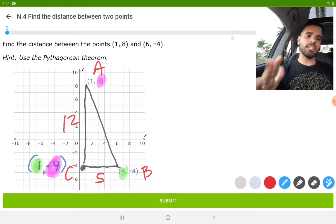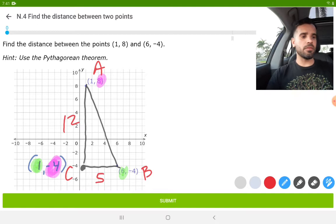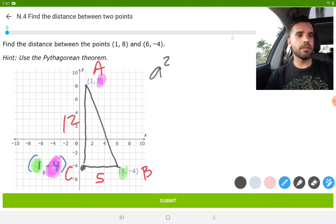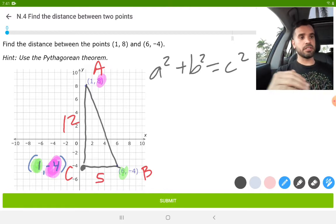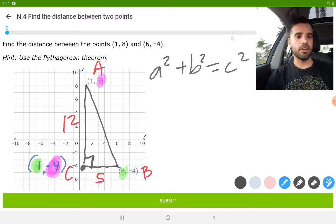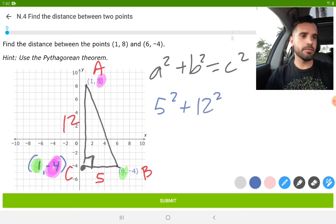Now, we're going to plug the information into the Pythagorean theorem, which is A squared plus B squared equals C squared. A and B are the two shorter lengths, and the hypotenuse is C, which is always directly across the right angle. I'm going to use five for A and 12 for B and solve.